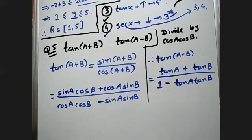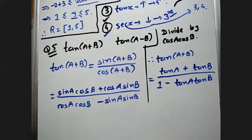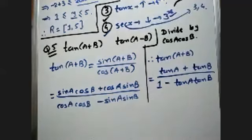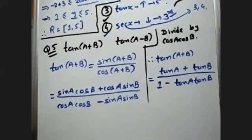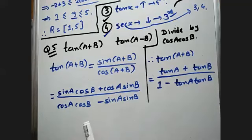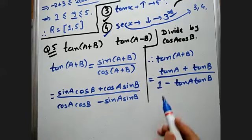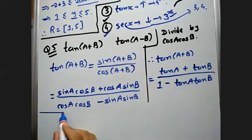Is this clear to everyone? No doubts? Good. Now we have to find the formula of tan(A-B) as well. But the condition is we should not use sin(A-B) or cos(A-B) — we must use only sin(A+B) and cos(A+B). So we will find tan(A-B) with the help of tan(A+B) only.